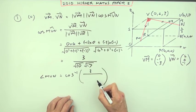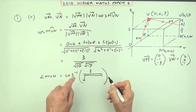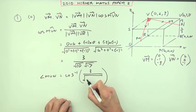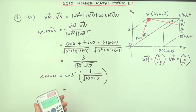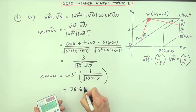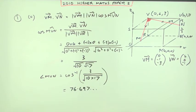Press the buttons and you get 76.697 and so on. So the angle would be, take it to one decimal place, 76.7 degrees for angle MVN.